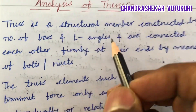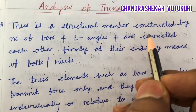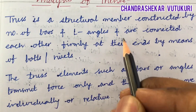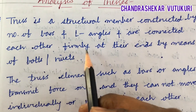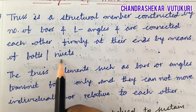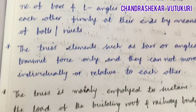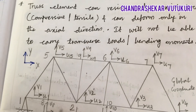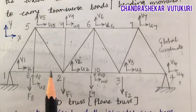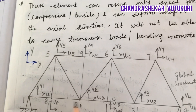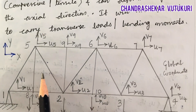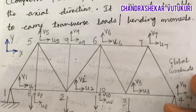A truss is a structural member constructed by a number of bars and L-angles that are connected to each other firmly at their ends by means of bolts and rivets. Hope you have seen trusses in the construction of building roofs as well as railway bridges for their support. It is mainly used to sustain the load of the building roof as well as the railway bridges.